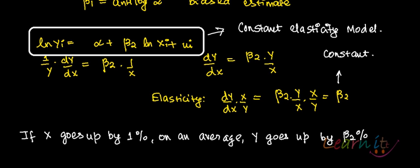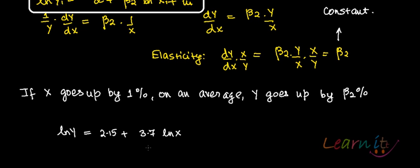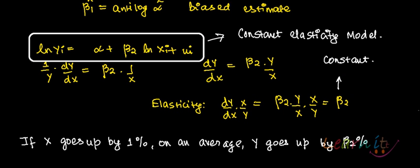For example, suppose after running the regression you get: log of y equals 2.15 plus 3.7 log of x. You interpret this as: if x goes up by 1%, then y goes up by 3.7%. That is how you interpret the log-log model — beta 2 gives the percentage change in y for a one percent change in x.